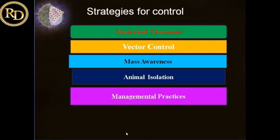Management practices are very important. If one animal in the herd has been found affected, there are 100% chances that secretions of that infected animal will be found in the feeding and watering troughs. Common feeding and watering troughs of the affected and healthy animals should be avoided. The isolated animal should be provided separate feeding and watering troughs.